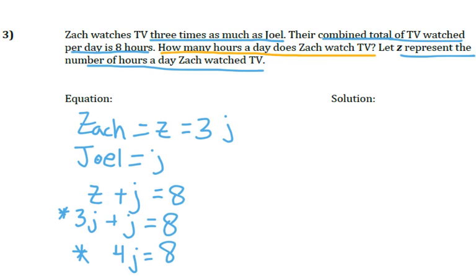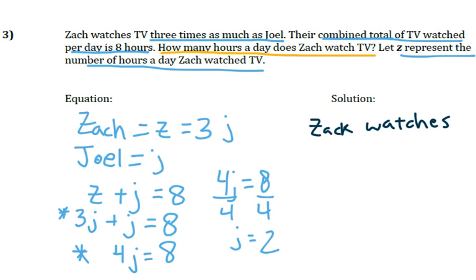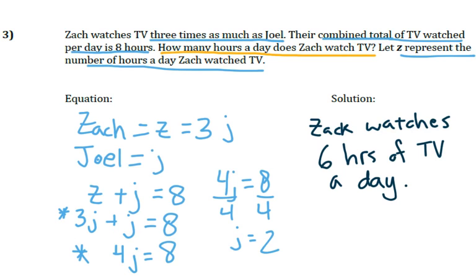We're going to finish solving this problem. We have four J equals eight, so we divide by four on both sides of our equation, giving us J equals two. That means Joel watched two hours of TV in a day. But that's not what we're looking for — the question asks how many hours a day does Zach watch TV. We can say Zach watches six hours of TV each day. We didn't have to write down what Joel did; we got six by taking two and multiplying it by three, from our expression for Zach: two times three is six.